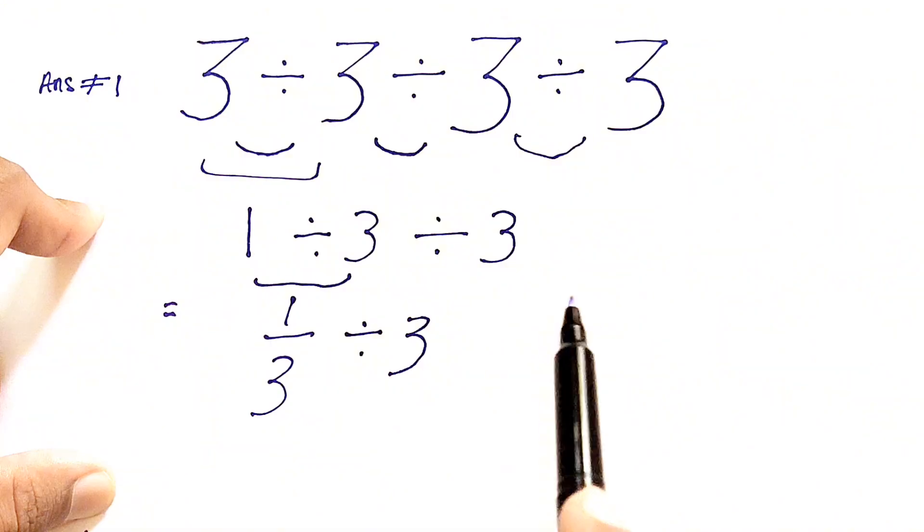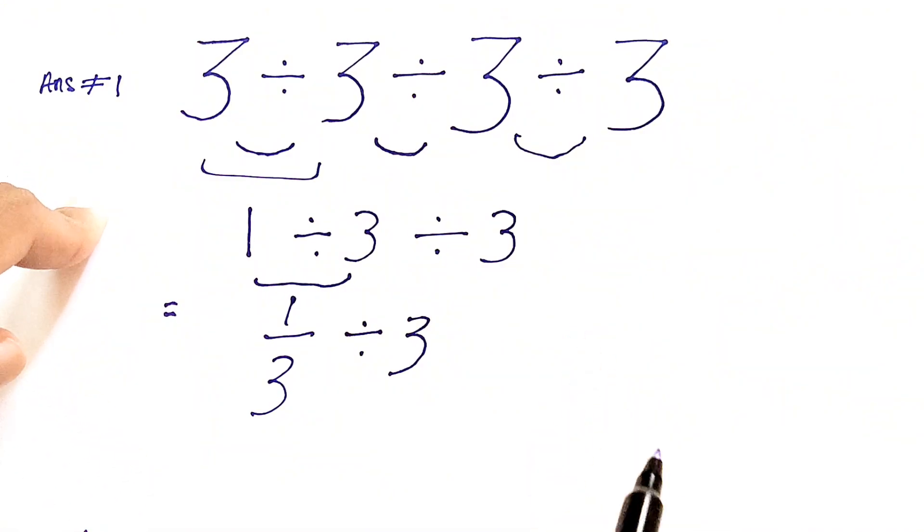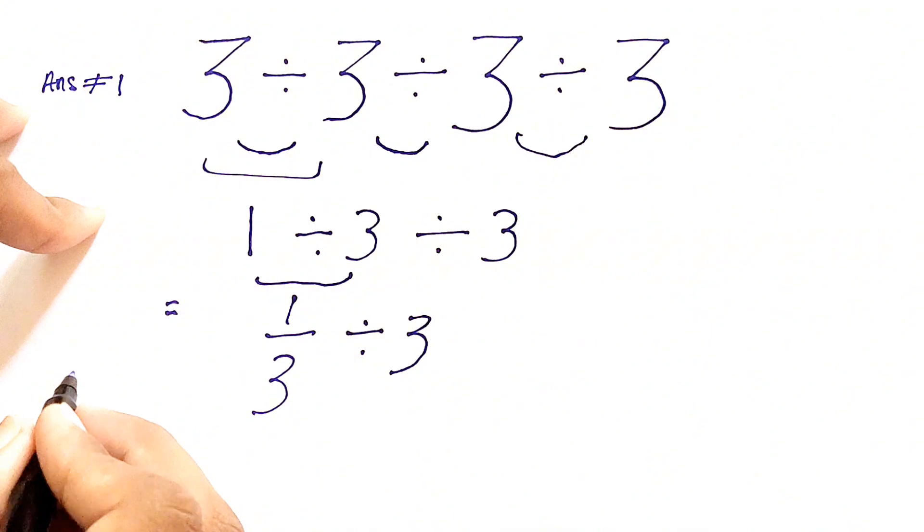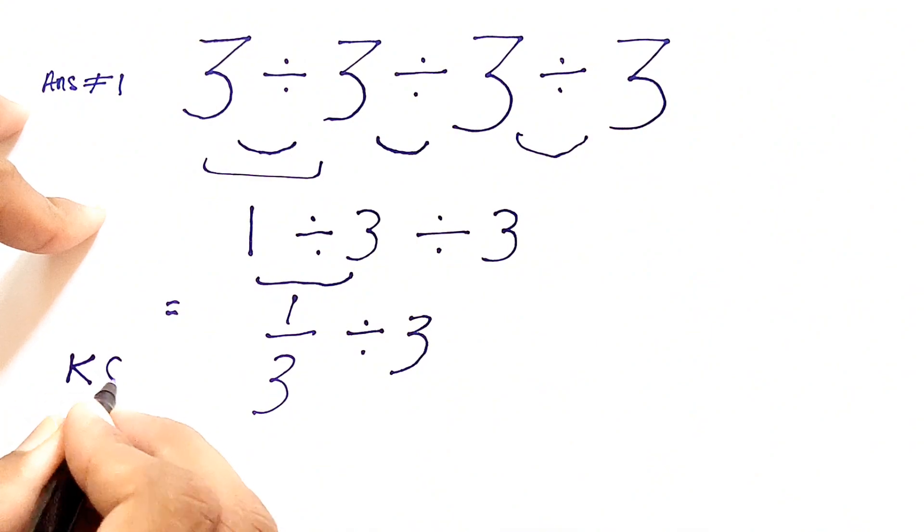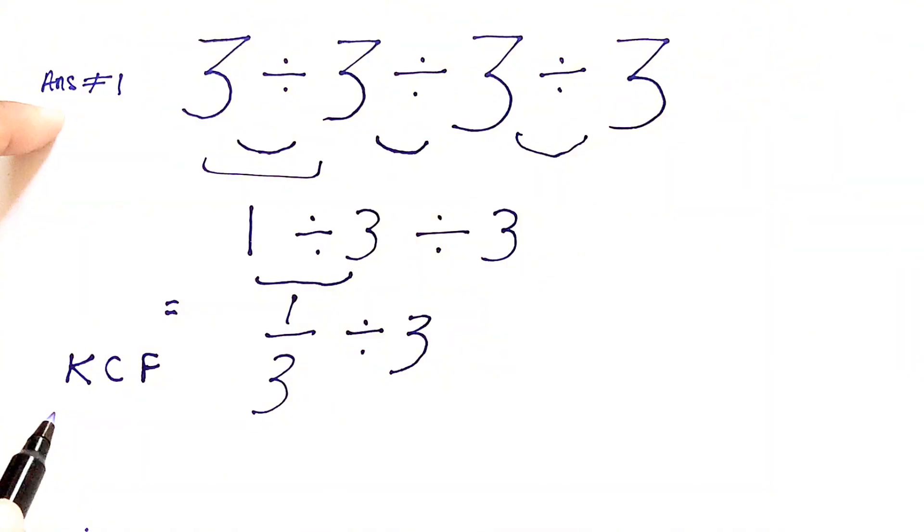Now here comes an interesting part of this expression. We need to follow a rule also known as KCF rule, in which K stands for Keep, C stands for Change, and F stands for Flip, which is actually used to divide fractions. So we need to take the reciprocal of the second digit, which is here 3. So let's see how we can do this.